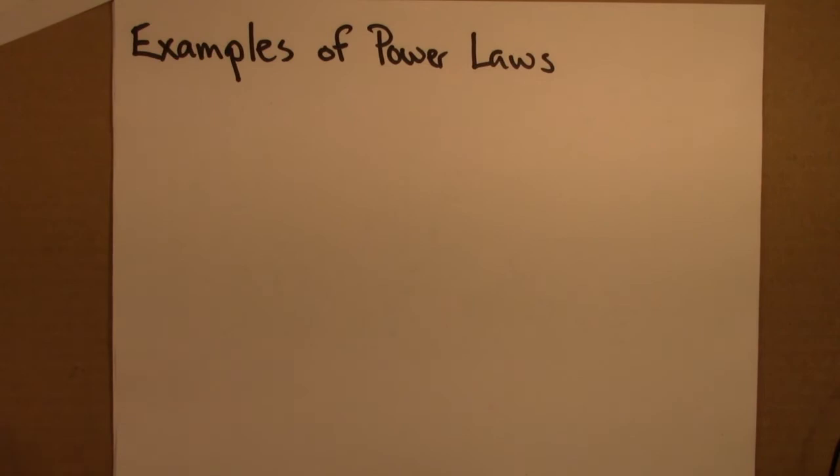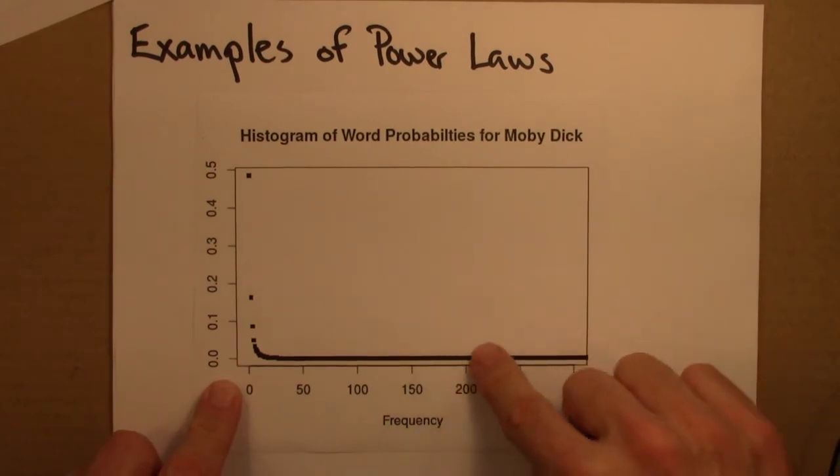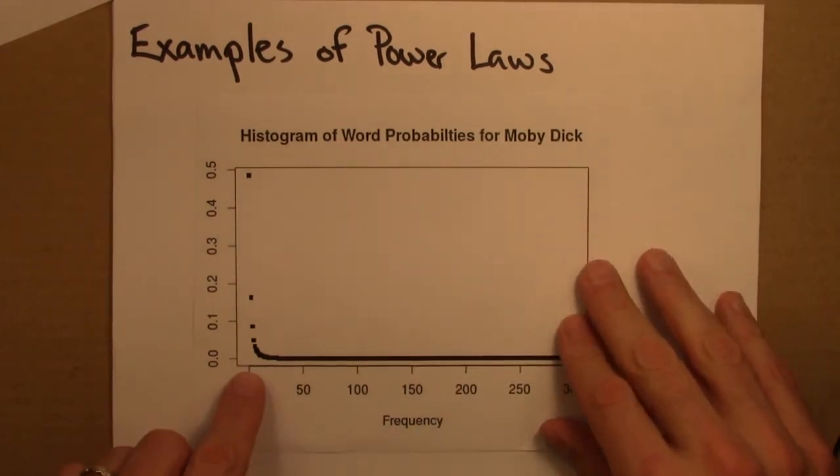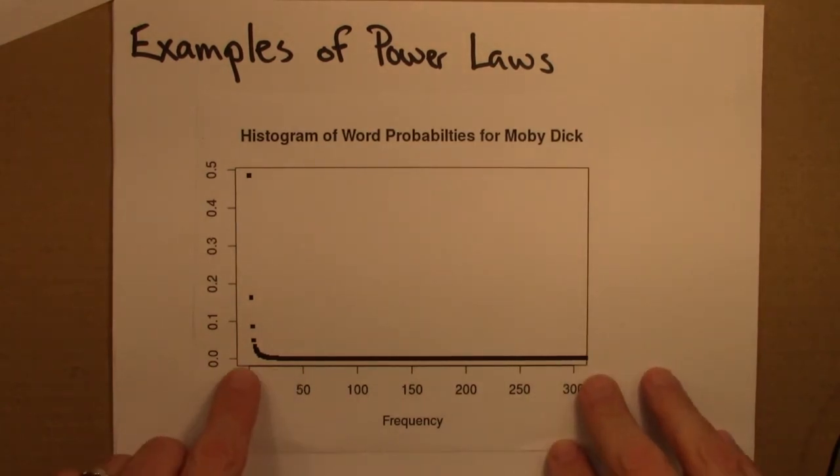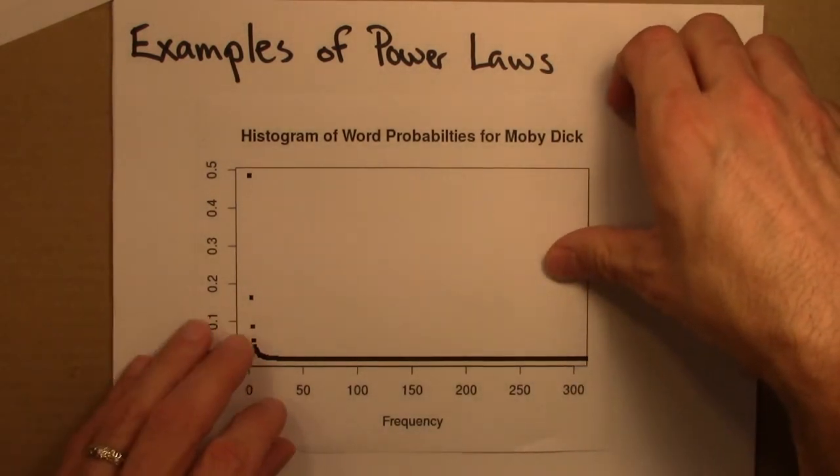So recall these features of power laws that there's a very wide range and this long tail. So we might see a lot of phenomena that are very small. So there are lots and lots of words that are used only once or maybe only twice or three times in Moby Dick. But then that tail extends very, very far out here so that there's some words that are used 300 times, 500 times, 10,000 times, and so on.